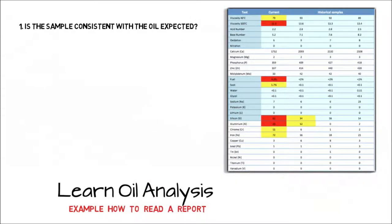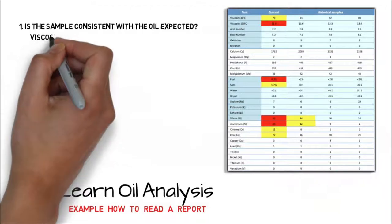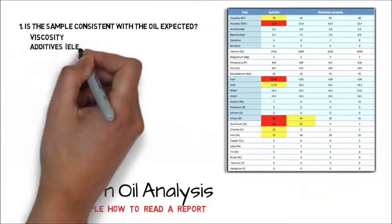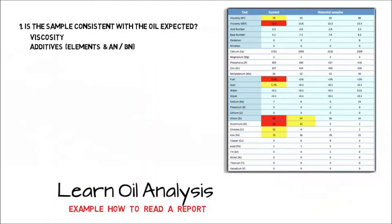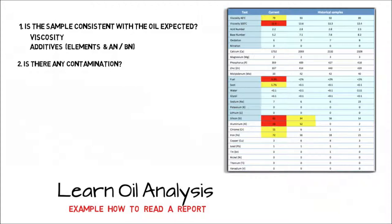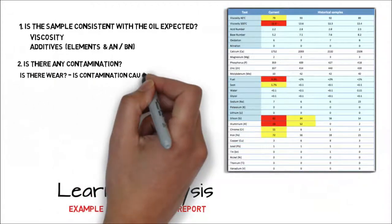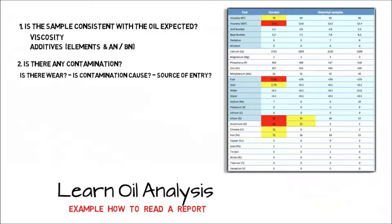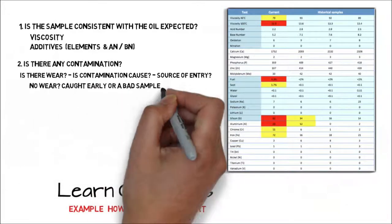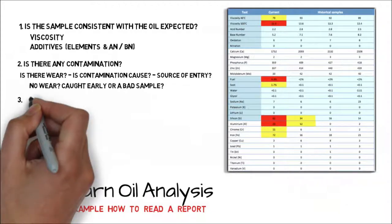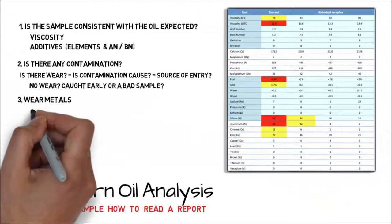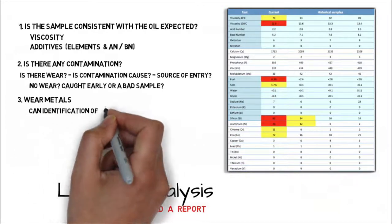The way I do this is first look at the viscosity as it is the most important property of the oil. Followed by additive levels which include acid number and base number values too. I next look at the contamination and if there is any wear that could be linked to the contamination. If there is no wear then this could be a fault caught very early on or a poorly taken sample. I then look at specific wear metals that appear abnormal and see if the pattern of elements can identify what is wearing.